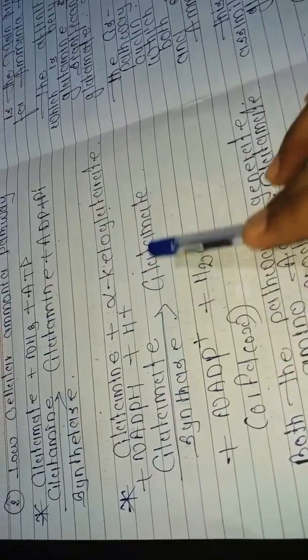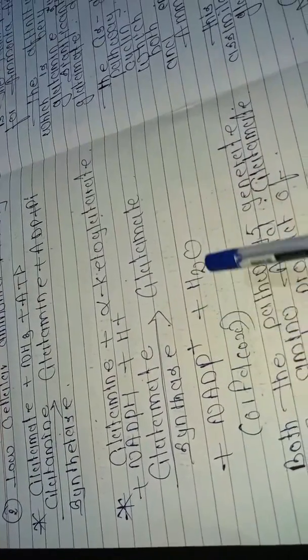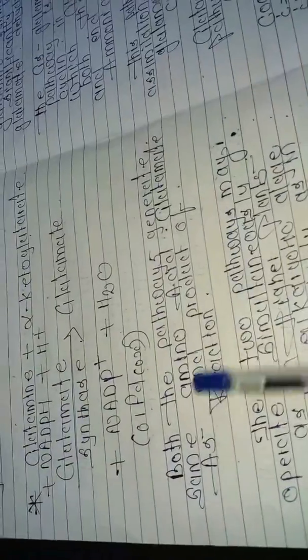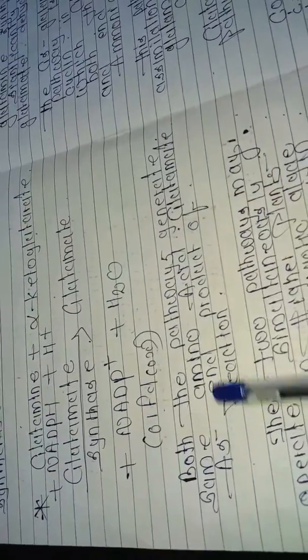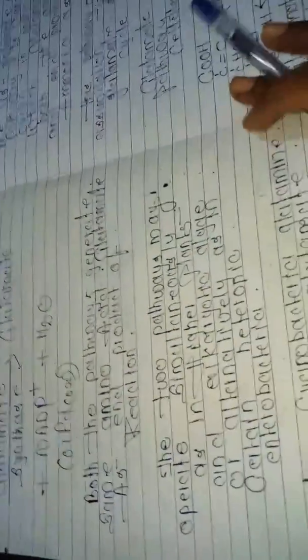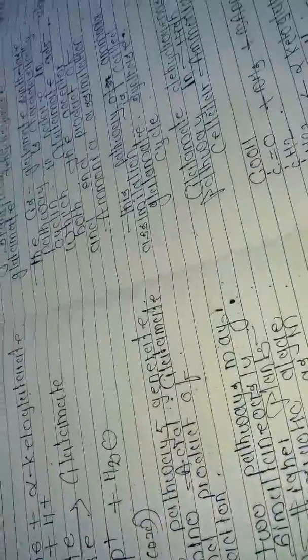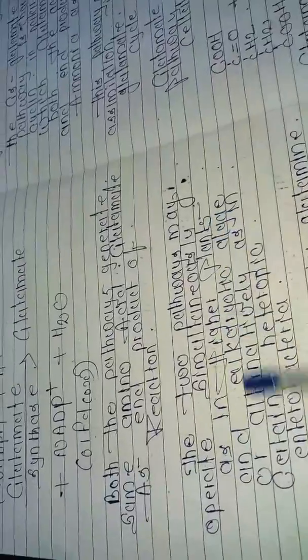Both pathways generate the same amino acid, glutamate, as the end product of the reaction. The two pathways may operate simultaneously, as in higher plants and eukaryotic algae.